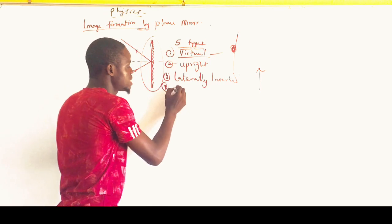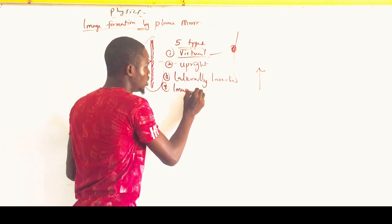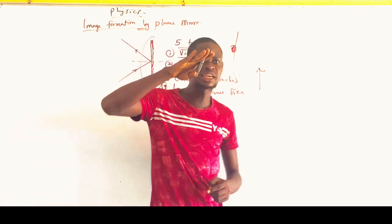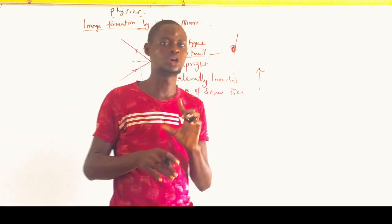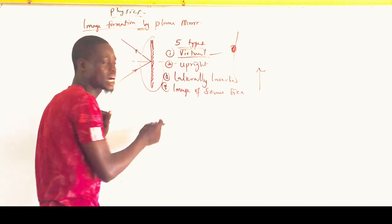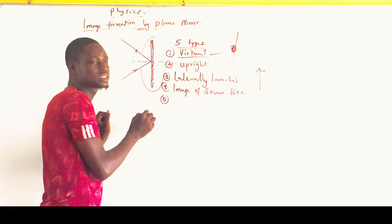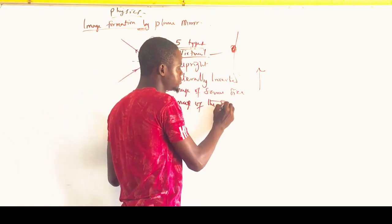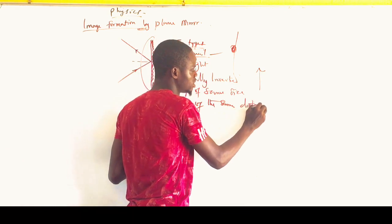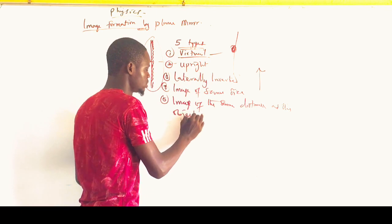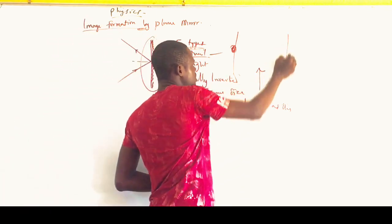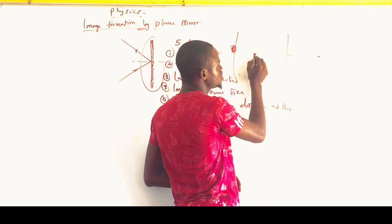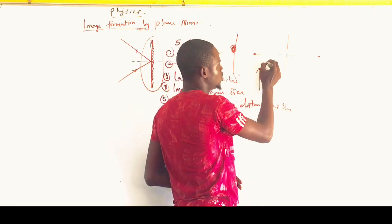Number four: a plane mirror forms an image of the same size as the object. This means the image height and the object height must be equal. Number five: all plane mirrors form an image at the same distance as the object. The distance between the object and the mirror is what we call object distance, U. If the object is here, the image will be on the other side at the same distance.